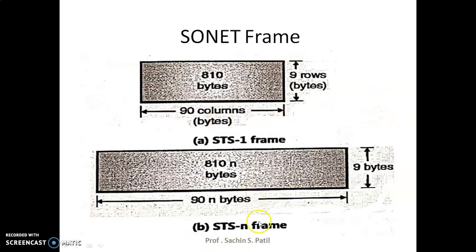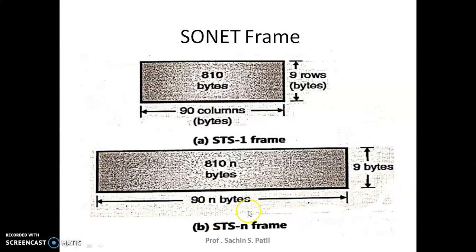In the case of STS-3, we have 3 multiplied by 51.84 Mbps — that is the frame rate for STS-3. The STS-3 frame rate is calculated as 9 × 90 × 3 × 270 × 8 × 8000 frames per second, giving us that frame rate.